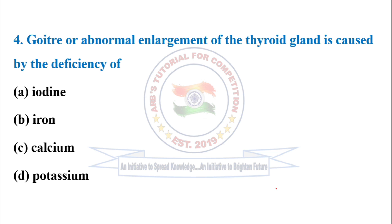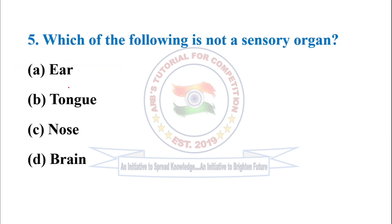Next question: goiter, or abnormal enlargement of the thyroid gland, is caused by the deficiency of — option A, iodine, is the correct answer.